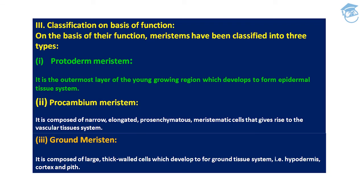The third classification of meristem is based on function. Meristems are classified into three types: First, protoderm meristem — the outermost layer of the young growing region which develops to form the epidermal tissue system. Second, procambium meristem — composed of narrow elongated meristematic cells that give rise to the vascular tissue system such as xylem and phloem. Third, ground meristem — composed of large thick-walled cells which develop for ground tissue systems such as hypodermis, cortex, and pith.